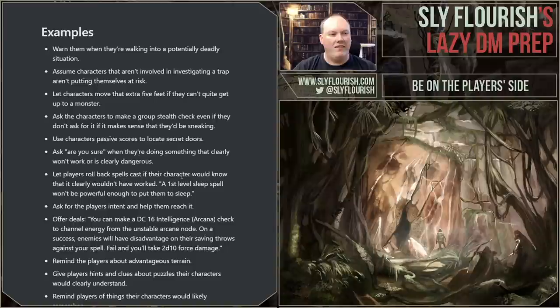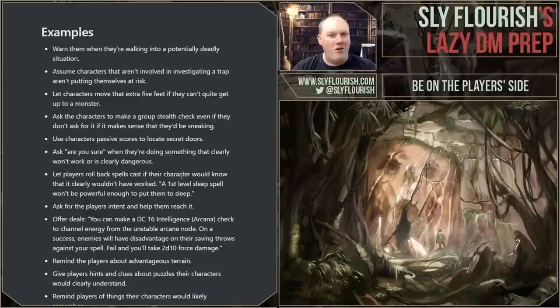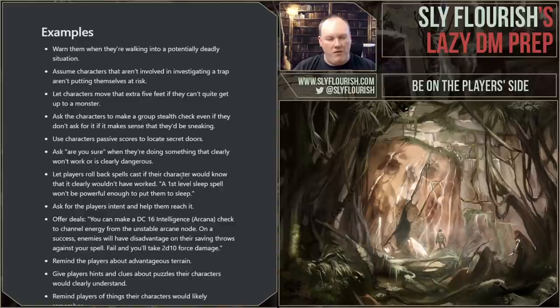Assume that the characters not involved in investigating a trap are at a safe distance. When somebody is investigating a trap or they think a door is trapped, presume all the other characters are at a safe distance. Don't assume they're all piled up saying, 'Oh, you're about to disarm an exploding glyph, let's all come and help, let's watch this.' No — the characters' lives are at risk. The players are on their phones, talking about other things, thinking about how traffic is going to be on their way home. Assume their characters are acting smartly and don't give them gotchas. Don't say, 'Well, sorry, you didn't say you weren't near the door.' Ask: is that really how a smart adventurer whose life is at risk would act? Don't give them gotchas.